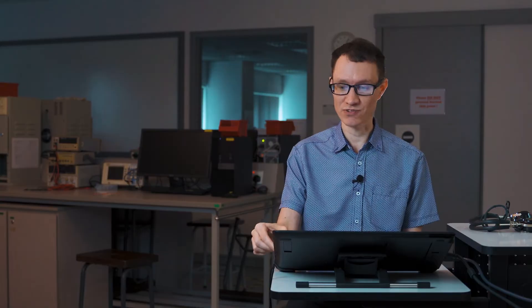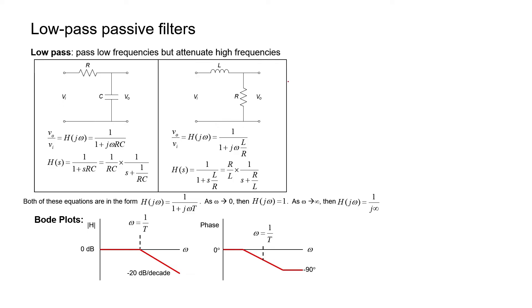Let's go back to our circuits and I'll show you how to make these plots without having to use a computer program. There's a simplified way of making a plot called the Bode method. We're going to make Bode plots right now. Here's what they look like — they're basically straight line approximations to these graphs.